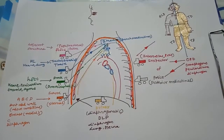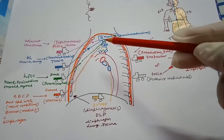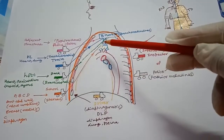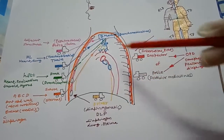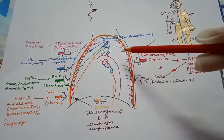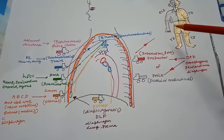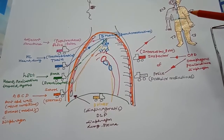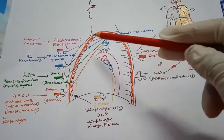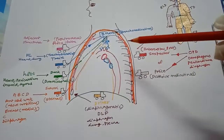We will study lymphatic drainage of the thorax. The lymph nodes are arranged in three rows: the anterior row, middle row, and the posterior row. These three rows form the primary channel. After that, lymph goes to the secondary channel and finally to the tertiary channel. The primary channel comprises three sets of lymph nodes: anterior set, middle set, and the posterior set.